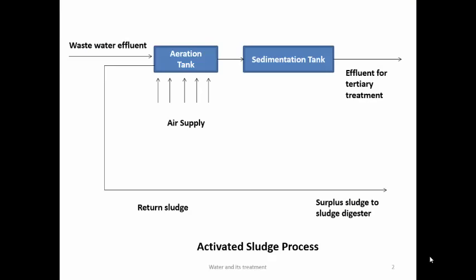Activated sludge method: wastewater from sedimentation is passed through an aeration tank where air is passed to oxidize organic matter. This process is slow but is fastened by using sludge from the previous oxidation — which contains numerous bacteria, hence called activated sludge. The mixture is kept for 6–8 hours with air passing through. Aerobic bacteria in the sludge carry out oxidation of organic matter. The treated water goes to a sedimentation tank and finally to tertiary treatment. Some sludge is used as fertilizer; part is sent to sludge digester; and part is recycled to the aeration tank as activated sludge for fresh sewage.